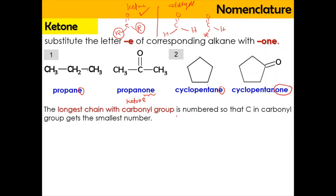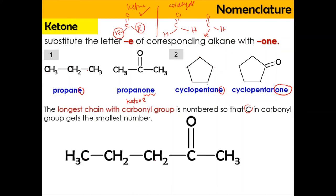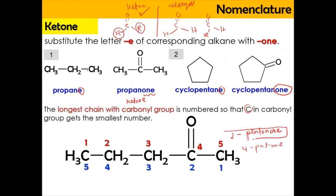The longest carbon chain with the carbonyl group is numbered so that the carbon in the carbonyl group gets the smallest number. For a five-carbon chain — pentanone — we should give the lowest number to that carbon. Starting from one end gives 1, 2, 3, 4, 5 — so we get 2-pentanone. Starting from the other end gives 4-pentanone. Since 2-pentanone gives the smaller number, 4-pentanone is wrong. The correct name is 2-pentanone.